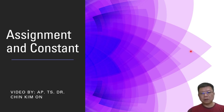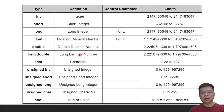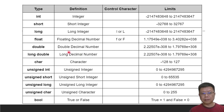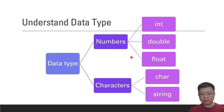In this video we're going to learn about assignment statements and constant variables. In the previous video you should have learned about data types — I summarized the common data types used in simple programs, like numbers and characters.